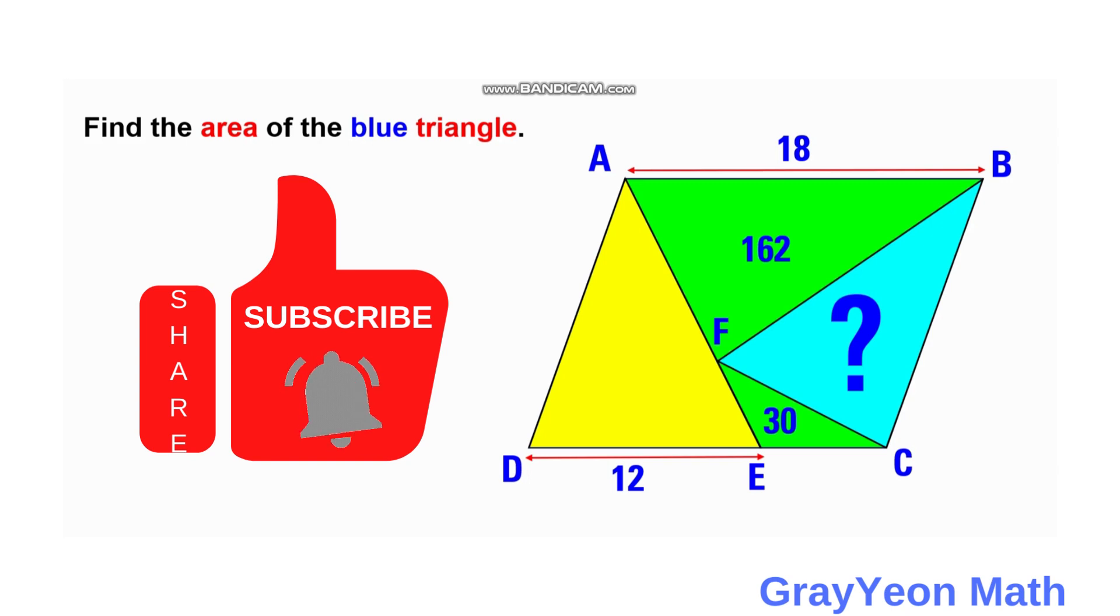And inside also are two regions, the two green regions A, B, F and F, E, C, and also there is this unknown blue region. The length of this parallelogram is 18, and segment DE is 12, and we are required to find the area of this blue region.